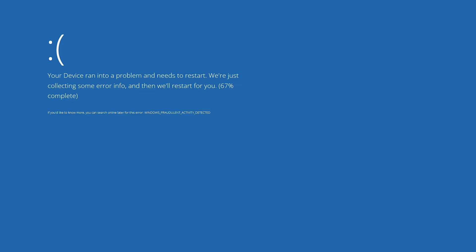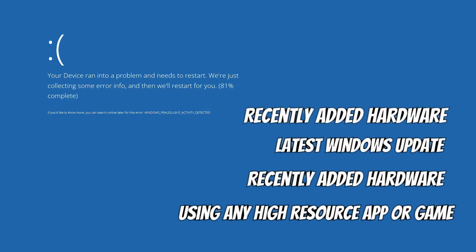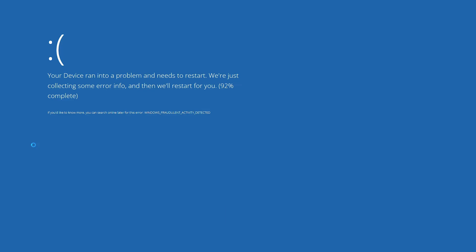First, let's look at the major causes behind this problem. Number one can be any kind of recently added hardware — like a printer, recorder, or mic — which can also create a problem. The second cause can be updating your Windows, or installing any new application or software. We also have reasons like exceeding high RAM and CPU usage — when you open any high-resource application or game, you can also get this kind of blue screen.